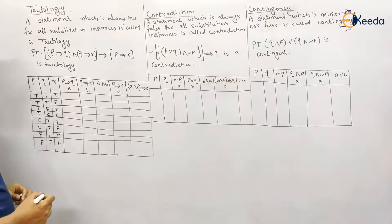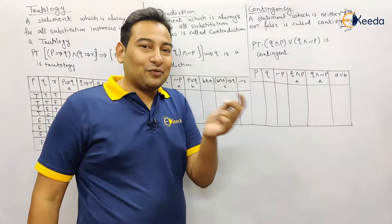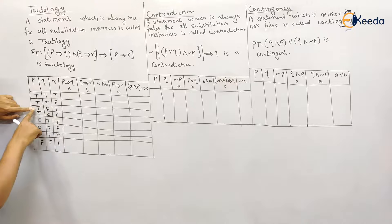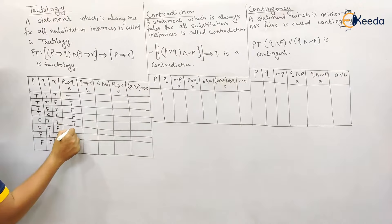The first column to compute is p implies q, so we look at the p and q columns. Remember the trick: true implies false (T→F) is the only false case. Checking: we get T→F, so that is false; again we get T→F, so that is false. Only two instances give T→F — the rest are all true.